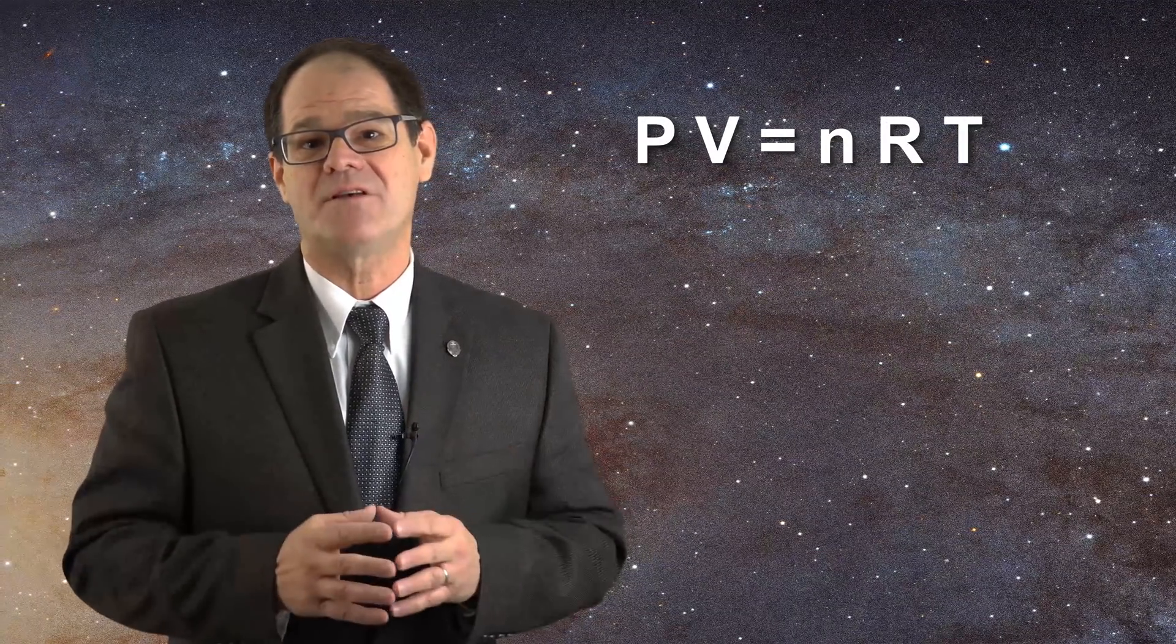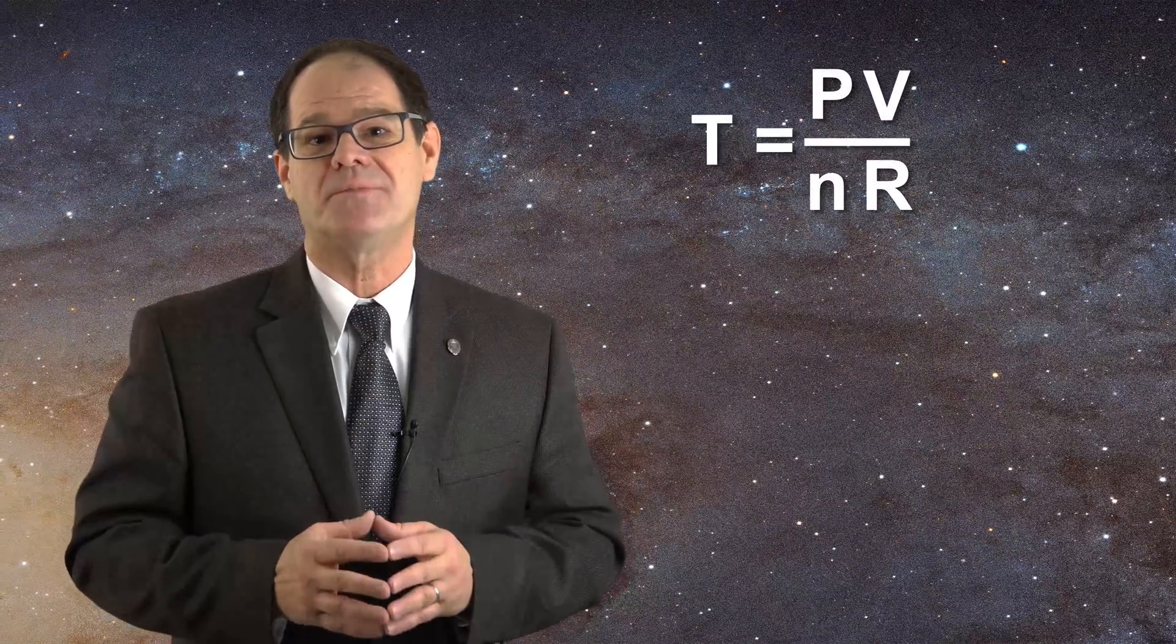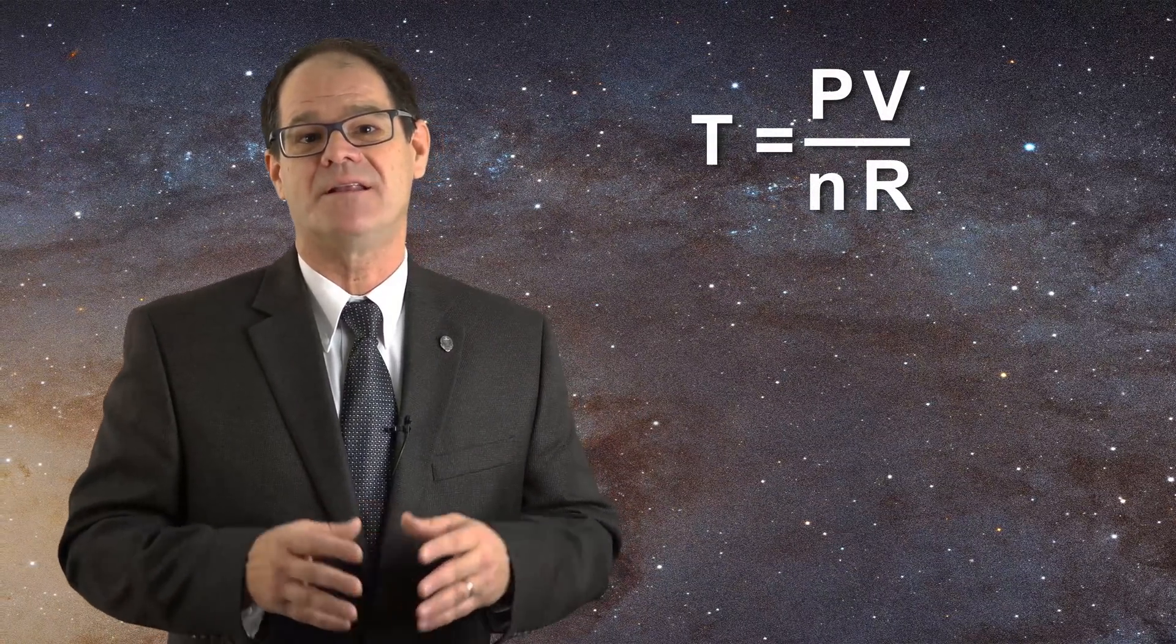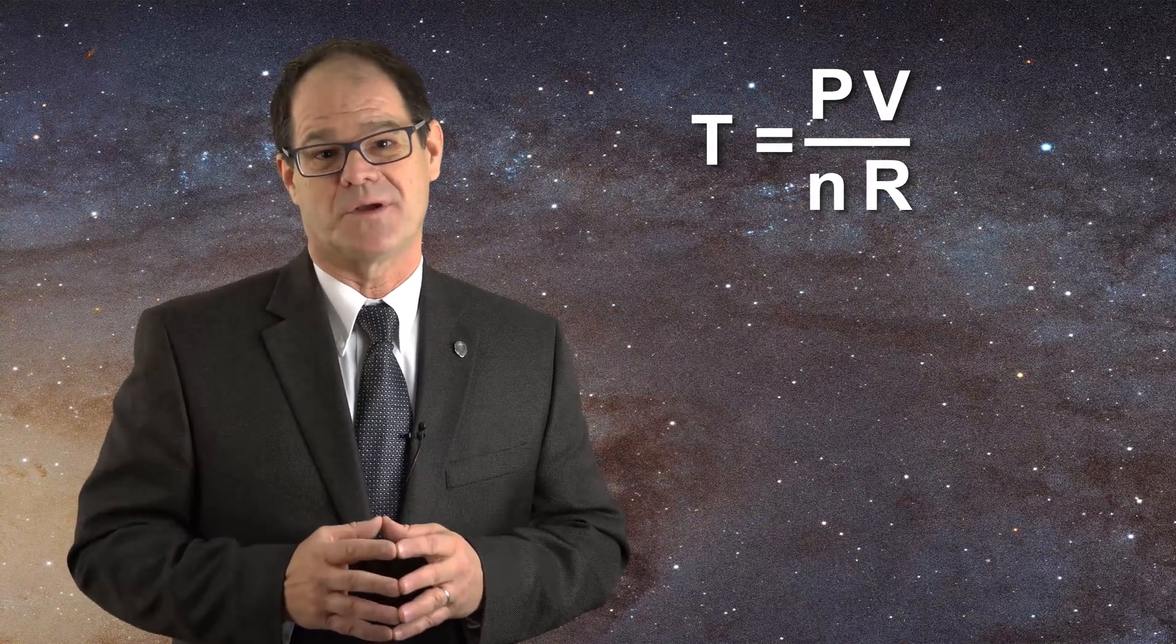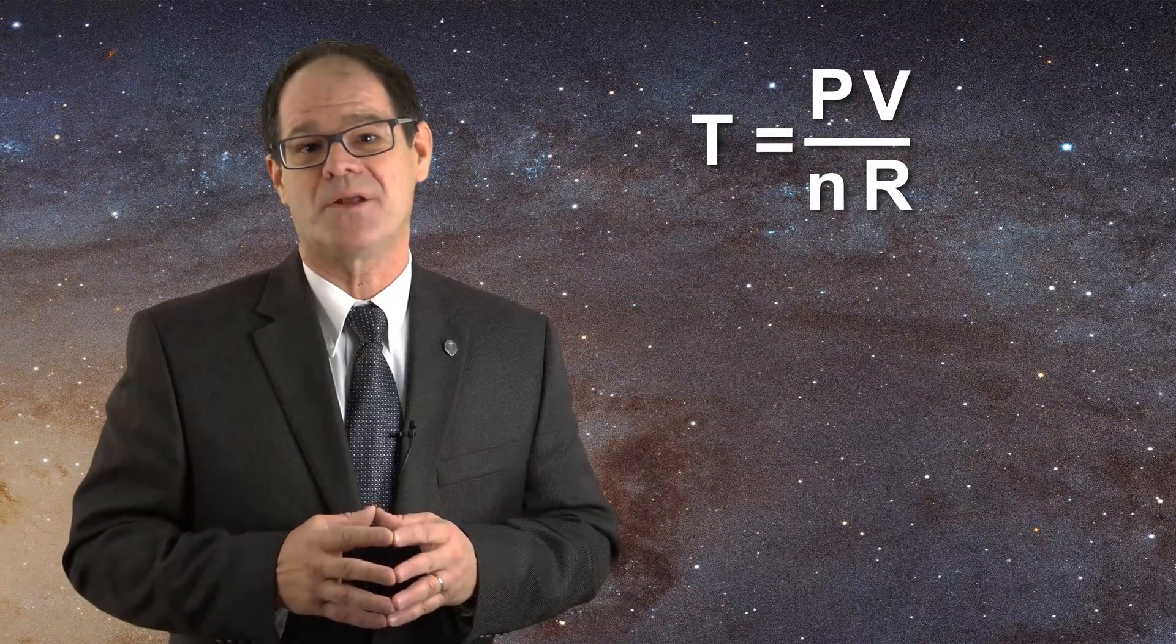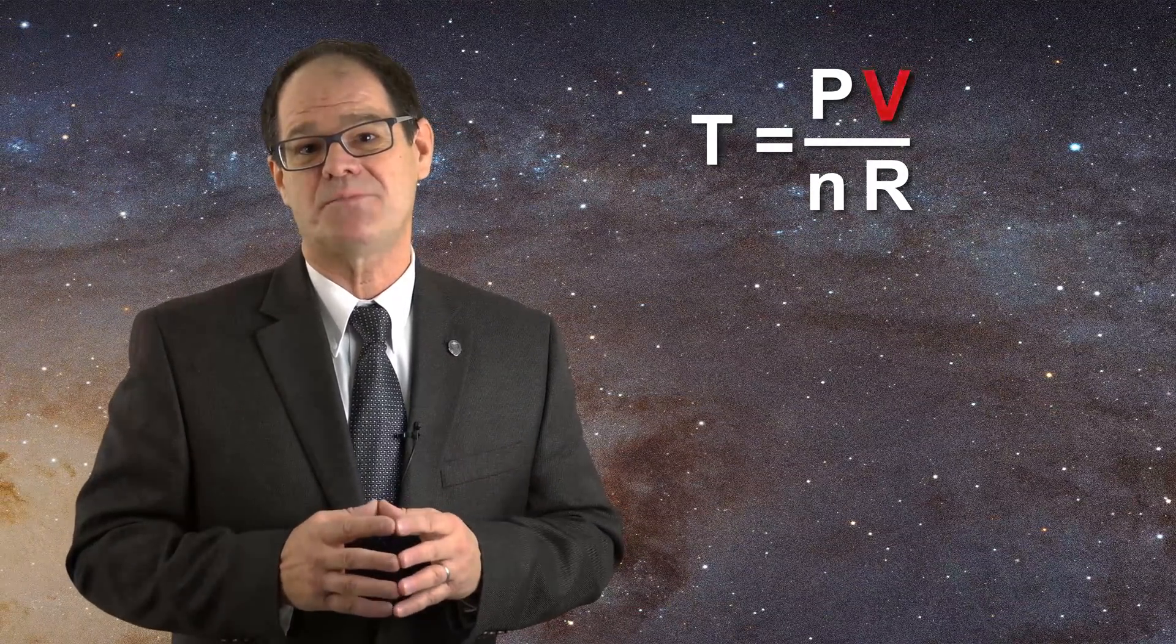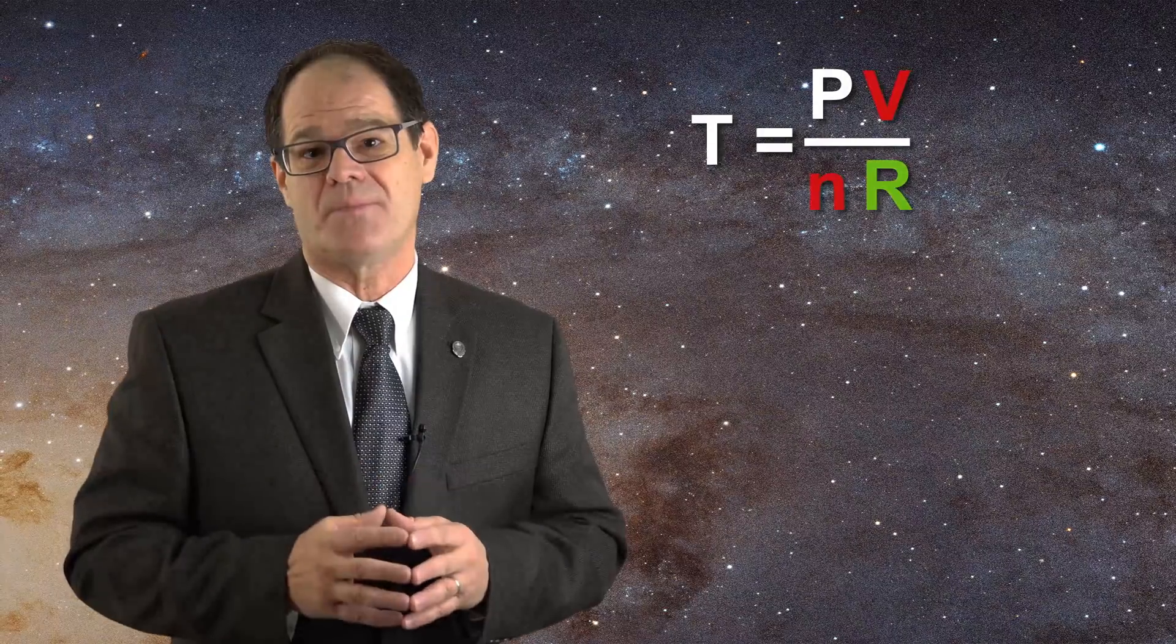Let us rewrite this equation in terms of temperature. In this rearranged equation, temperature is now on the left. It is an intensive property, a fact also recognized by the zeroth law. On the right we now have pressure, also an intensive property, then volume, an extensive property divided by R, a constant, and the number of moles, an extensive property.